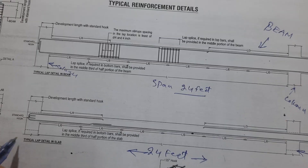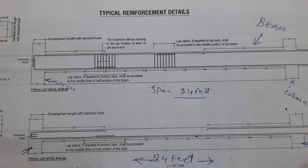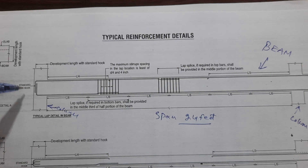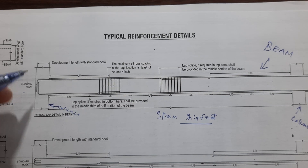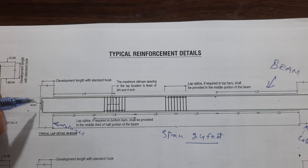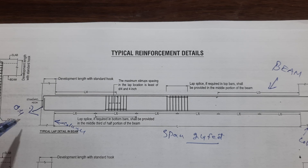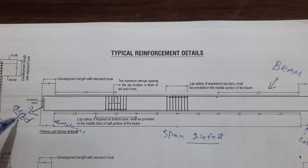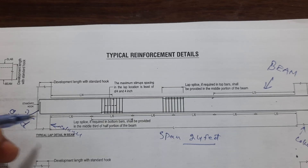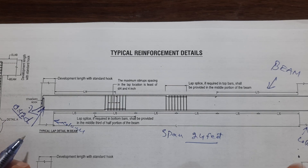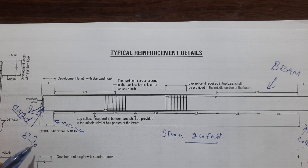Here you can see this is the column, and this is the standard hook. Look at here — for the standard hook you can get the length from the formula 0.42d, where d is the depth of the beam. Normally, if you don't apply the formula, you can take the value up to 8 to 10 inches, depending on the structural design.